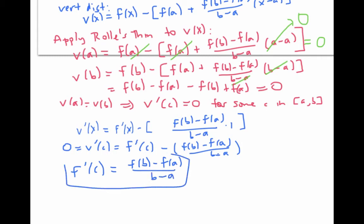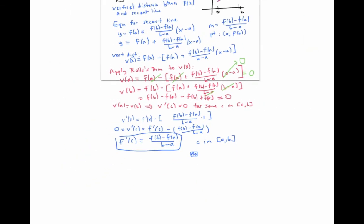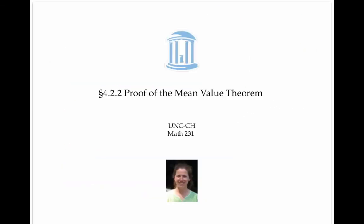That is, there's a value of c in the interval [a,b] such that the derivative of f at c is equal to the average rate of change of f. And that's exactly the conclusion of the mean value theorem. That concludes our proof of the mean value theorem.